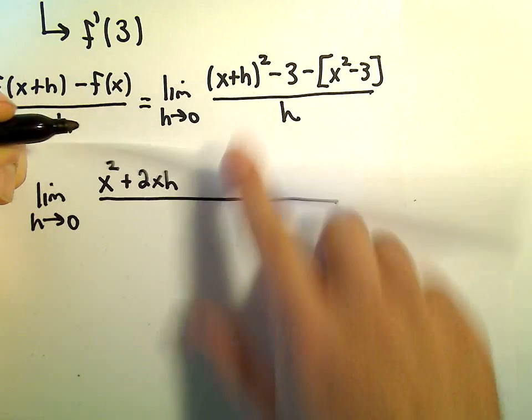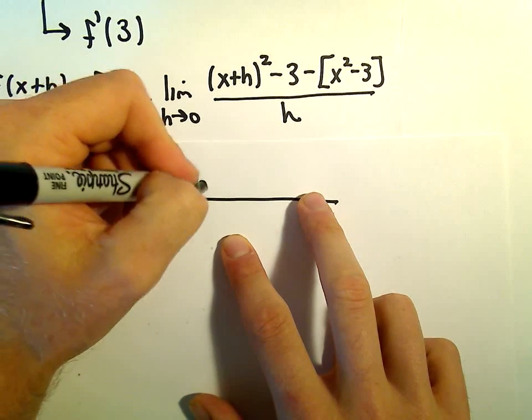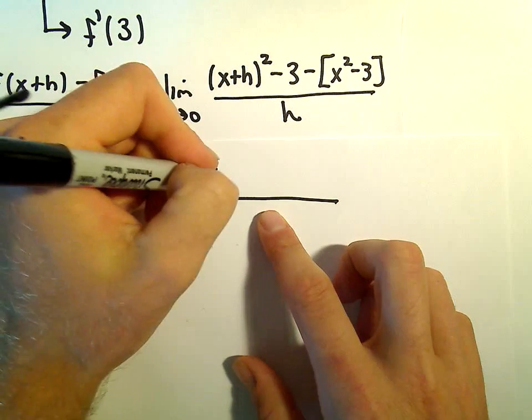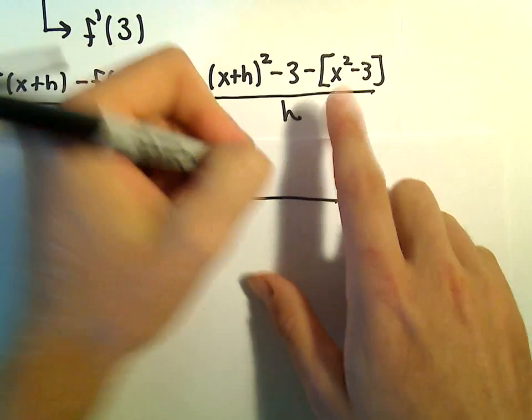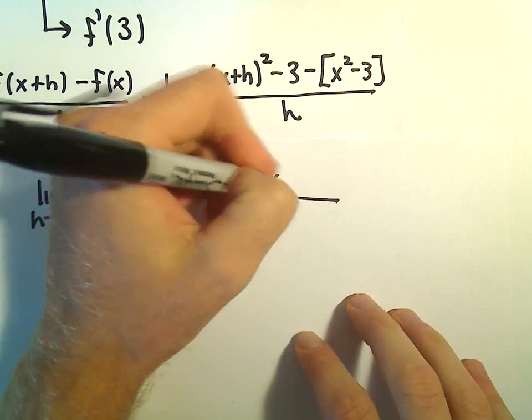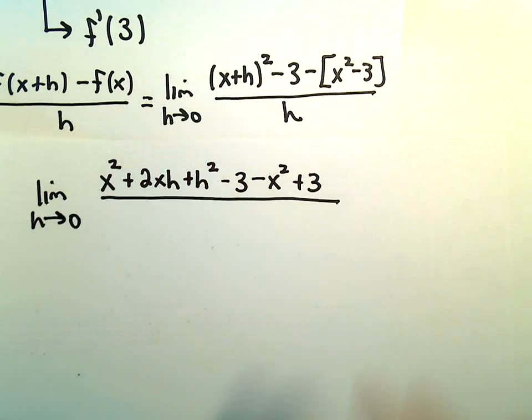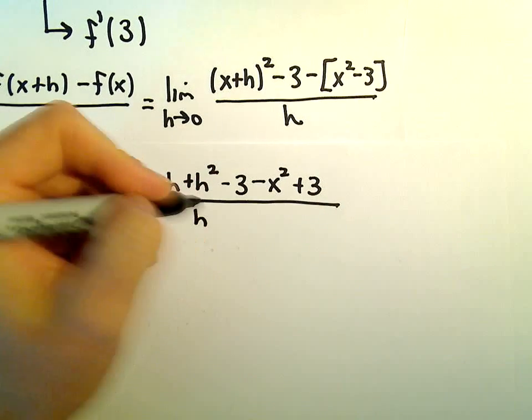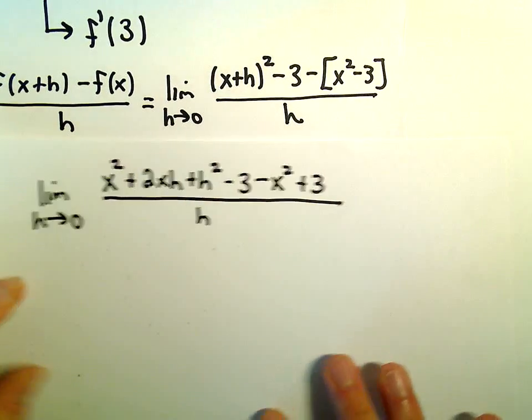And then h times h would give us h squared. We've still got our minus 3. If we distribute the negative, we'll get negative x squared plus 3. And everything's all over h.